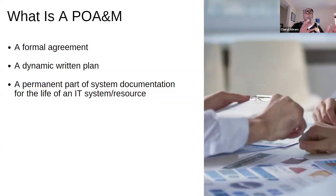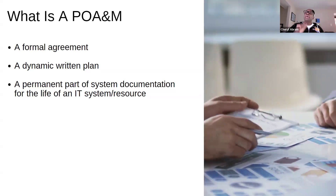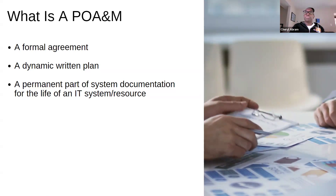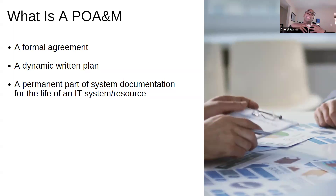A POAM is a formal agreement between two primary roles: the individual accountable for an organization's cybersecurity risk decisions — typically the CISO or the authorizing official — and the manager responsible for the overall security and operation of an IT system, which would be the system owner. A POAM is also a dynamic or living written plan used to identify, track, prioritize, and monitor system vulnerabilities. As far as DOD is concerned, it's a permanent part of system documentation for the life of an IT system, application, or resource.